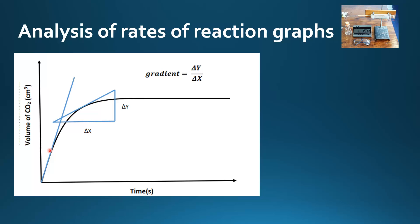The initial rate of reaction can be measured by drawing a tangent to the curve at time equals zero, which is what this blue line is here. We can then calculate the gradient of the line, which is the change in y over the change in x.